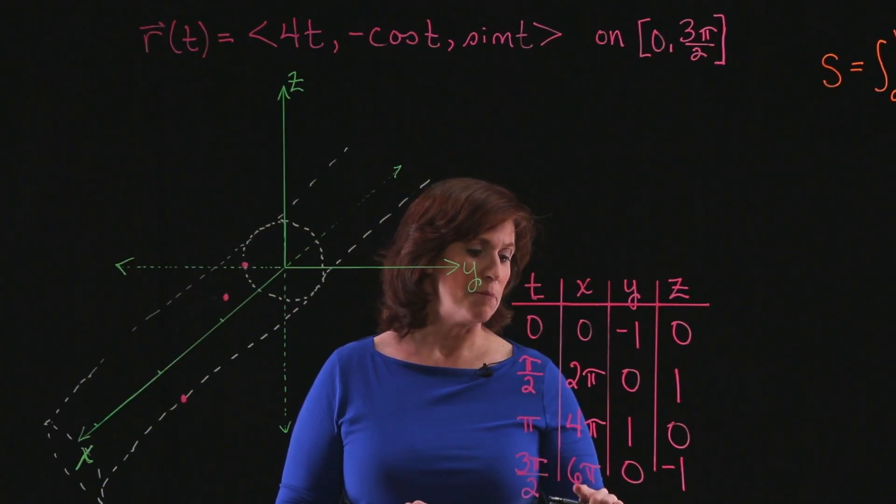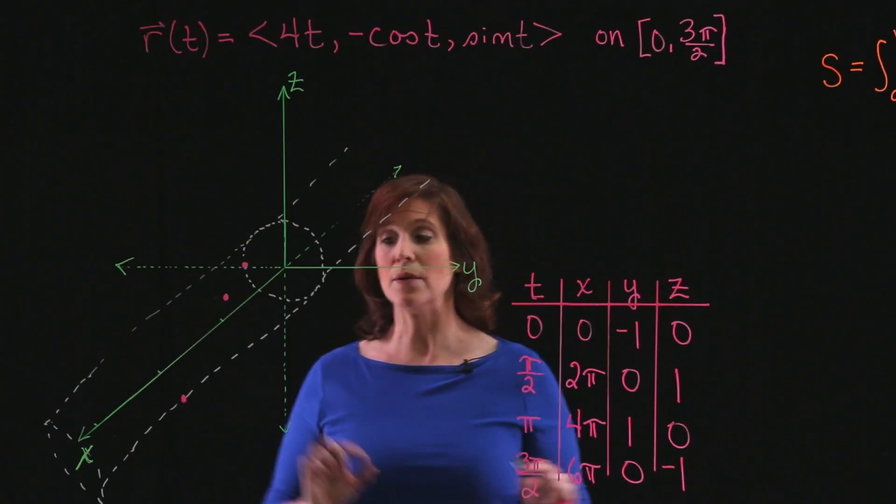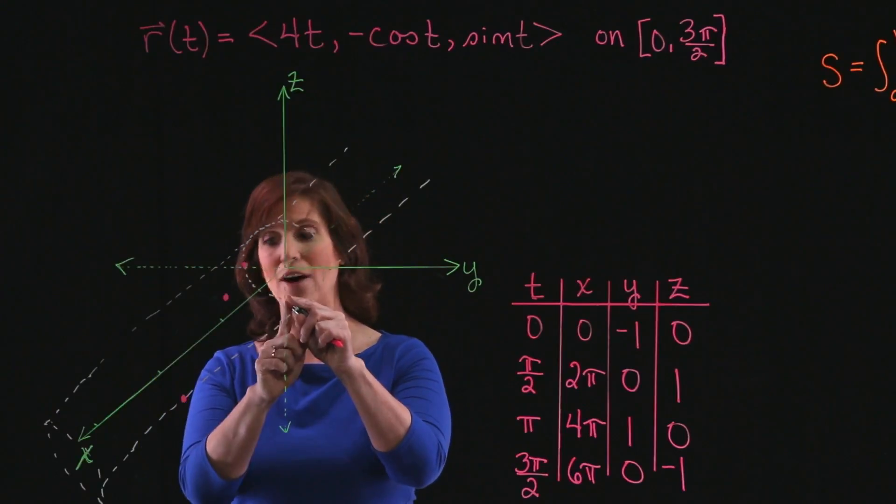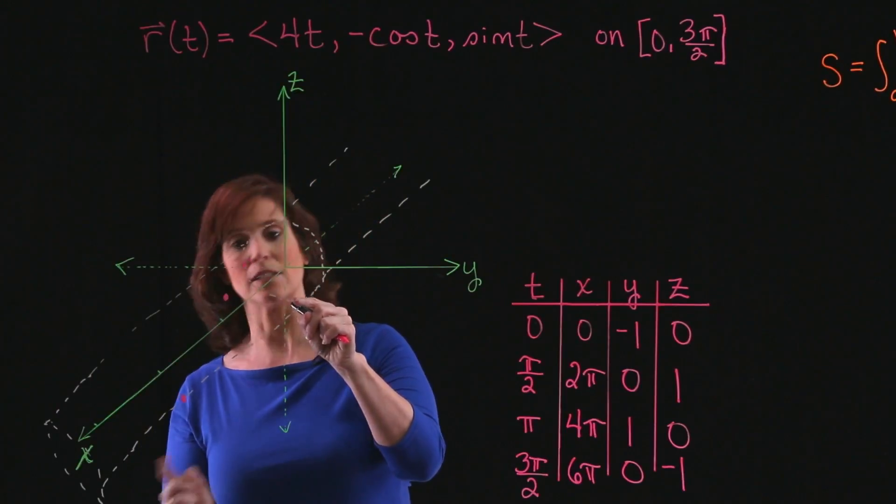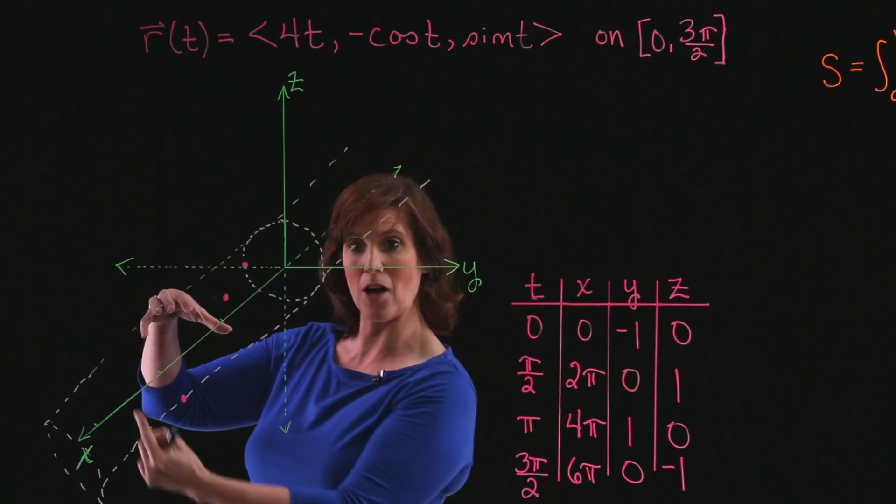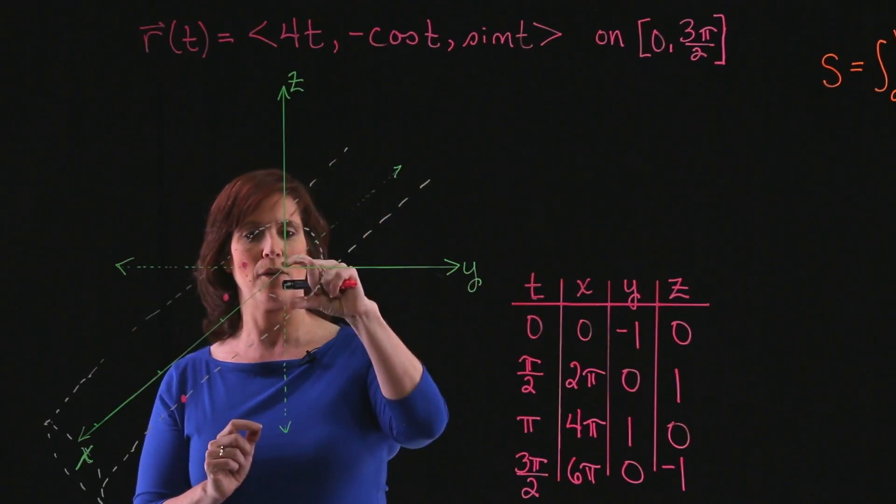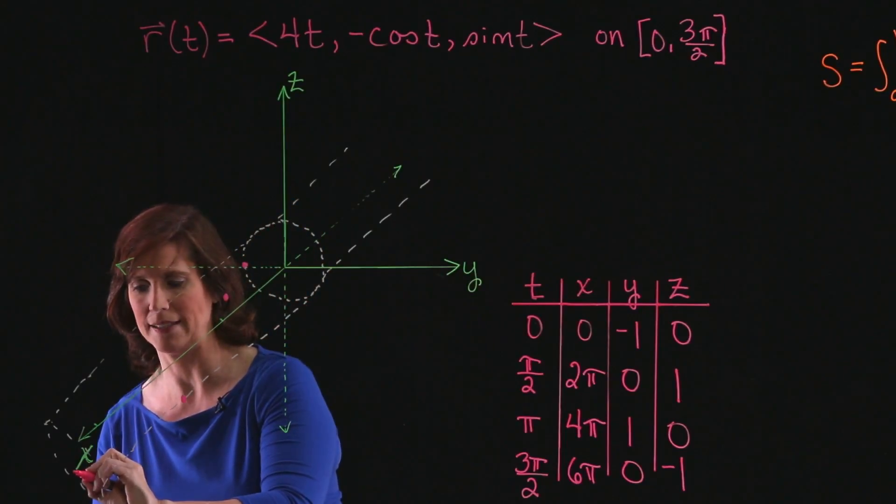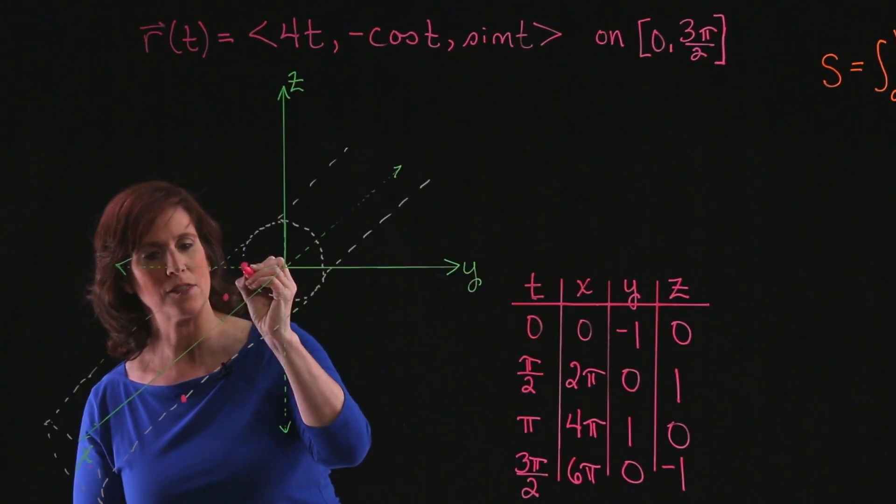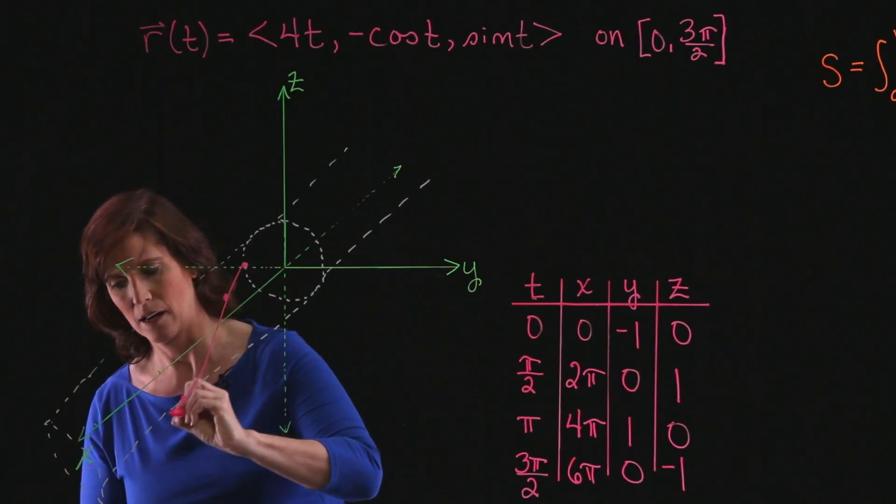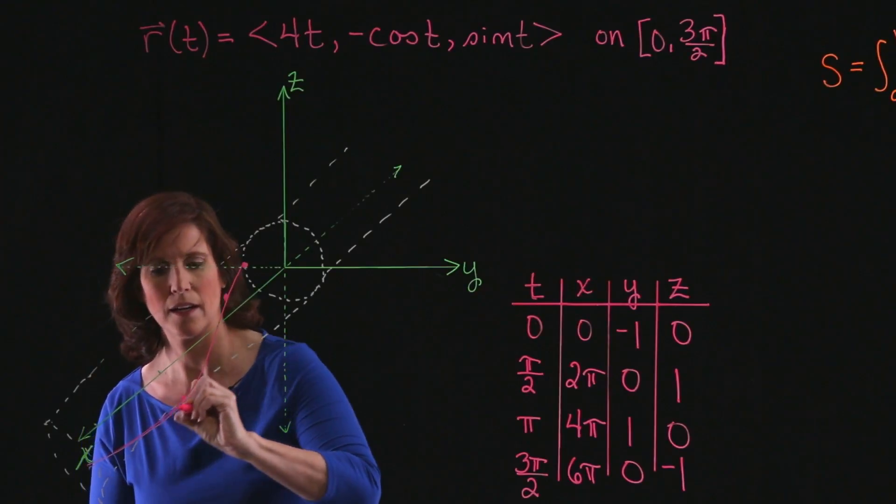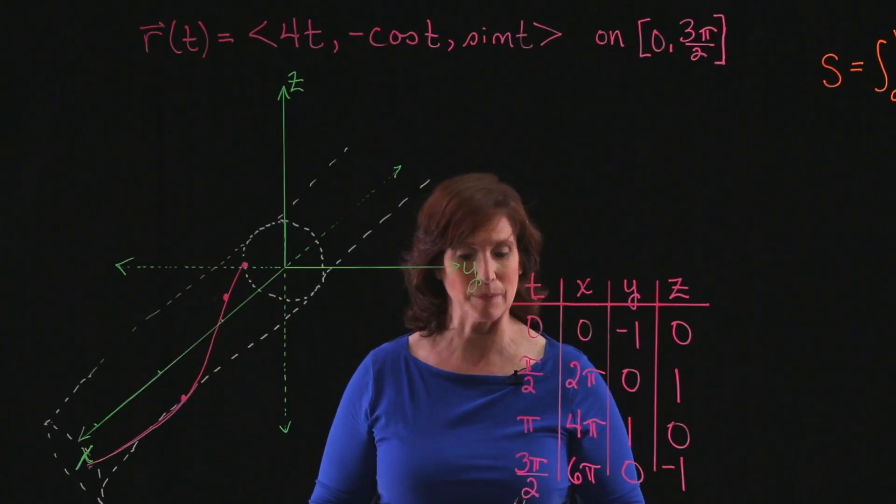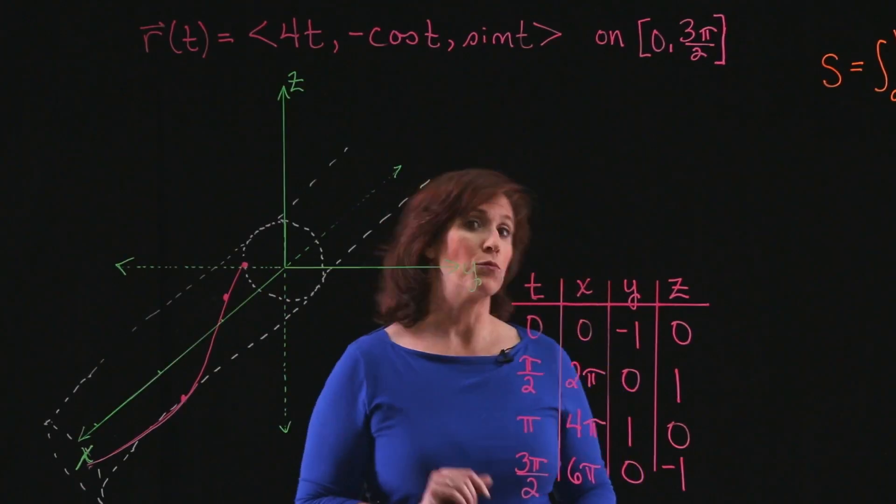And then finally, I have (6π, 0, -1). 0, -1 on the y-z-plane is easy to see. But I need to take this and move it out 6π units along the x-axis. So if you can imagine this cylinder coming out, it's going to be on the underside of that cylinder. And if you draw this curve in, you can kind of envision that it's wrapping around the cylinder. This is going to be a circular helix.